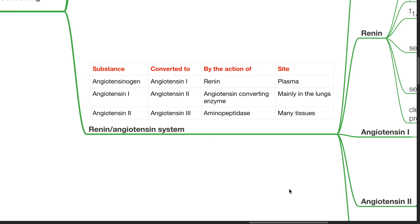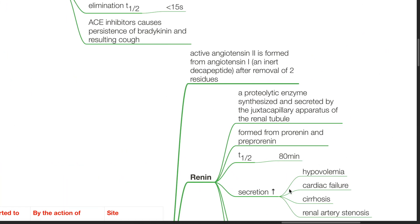Renin angiotensin system. Angiotensinogen is converted to angiotensin 1 by renin at the plasma. Angiotensin 1 is converted to angiotensin 2 by angiotensin converting enzyme, mainly in the lungs. Angiotensin 2 is converted to angiotensin 3 by aminopeptidase in many tissues. Active angiotensin 2 is formed from angiotensin 1, an inert decapeptide, after removal of two residues.